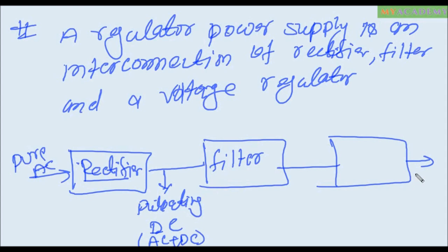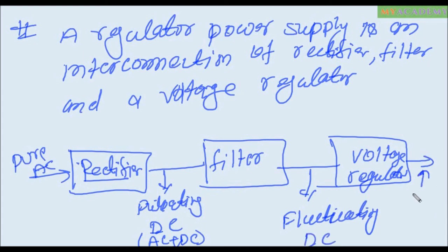This is the voltage regulator. This is the fluctuating DC and the output of voltage regulator is a regulated or stable DC. Means in a power supply the diagram of power supply. Thank you for watching, please subscribe my channel, don't forget to subscribe my channel, thank you.